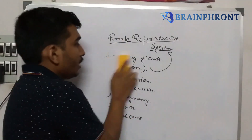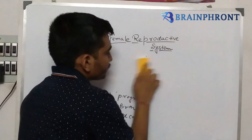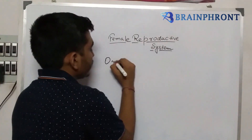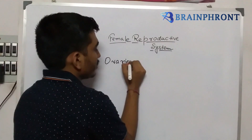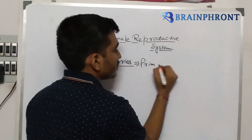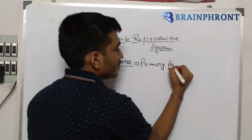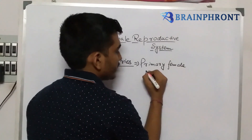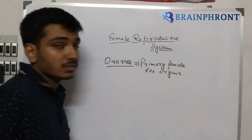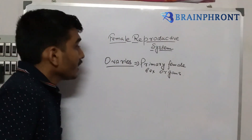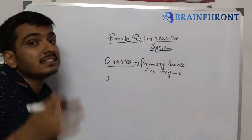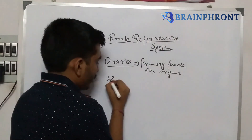Now let's start with the ovaries. Ovaries are the primary female sex organs which help in the process of formation of ovum. They also help in the secretion and synthesis of steroid hormones.